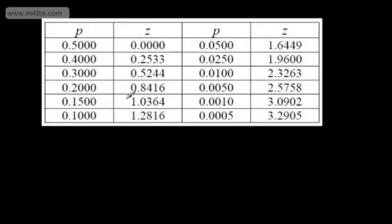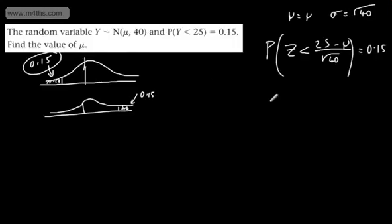So 0.15, so normally it would be 1.0364. So it needs to be minus that value. So what we're going to have then is minus 1.0364. And that will be equal now to 25 minus μ divided by root 40.